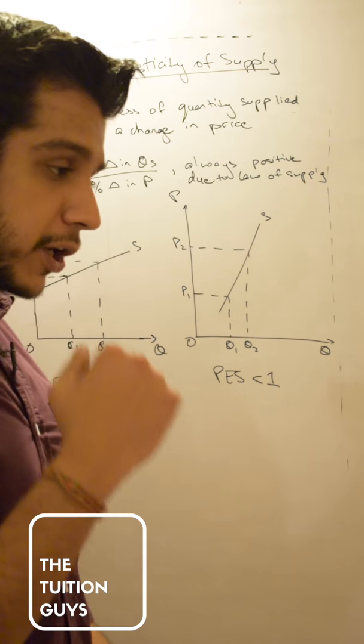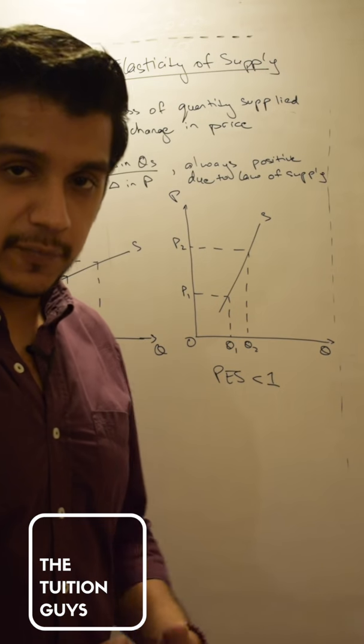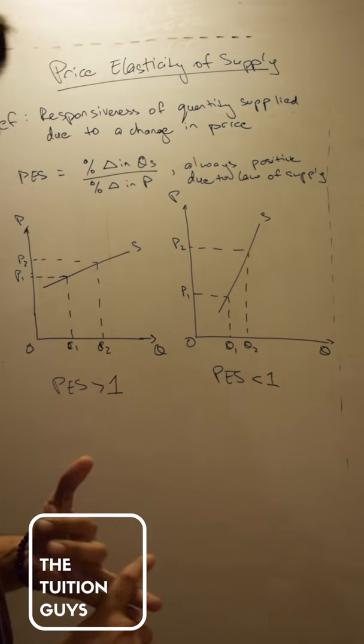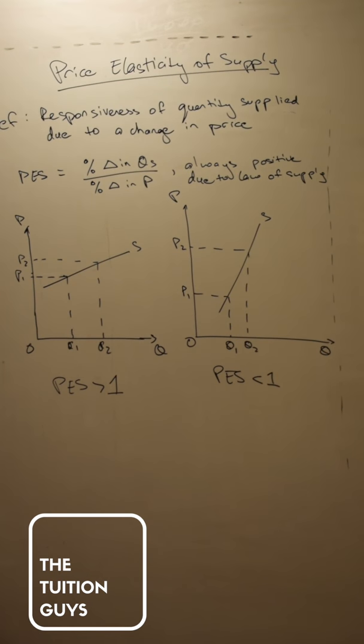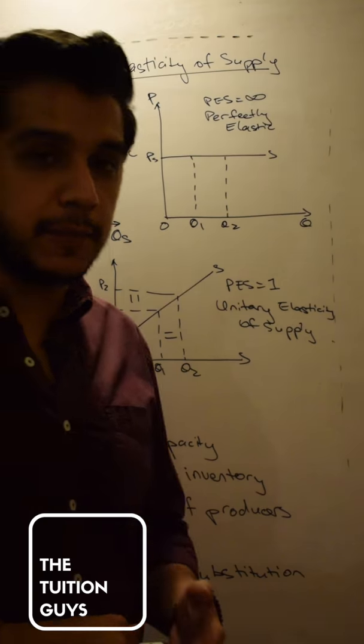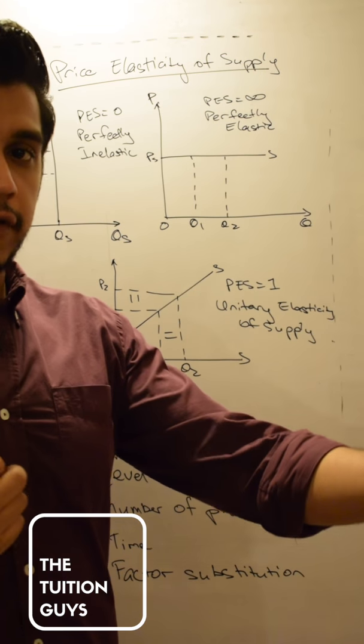We're going to touch three more kinds of price elasticity of supply: price perfectly elastic, perfectly inelastic, and unitarily elastic. The three further variations.